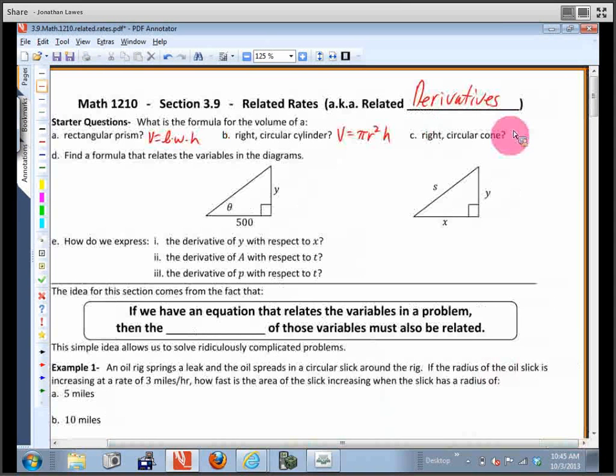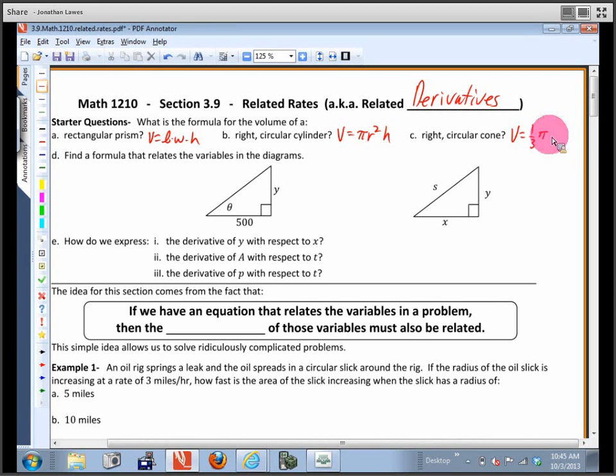And I'll be impressed if anybody knows this, volume of a cone. Yeah, it's exactly one-third of the cylinder that it would fit in, so pi r squared h divided by three, or one-third pi r squared h.